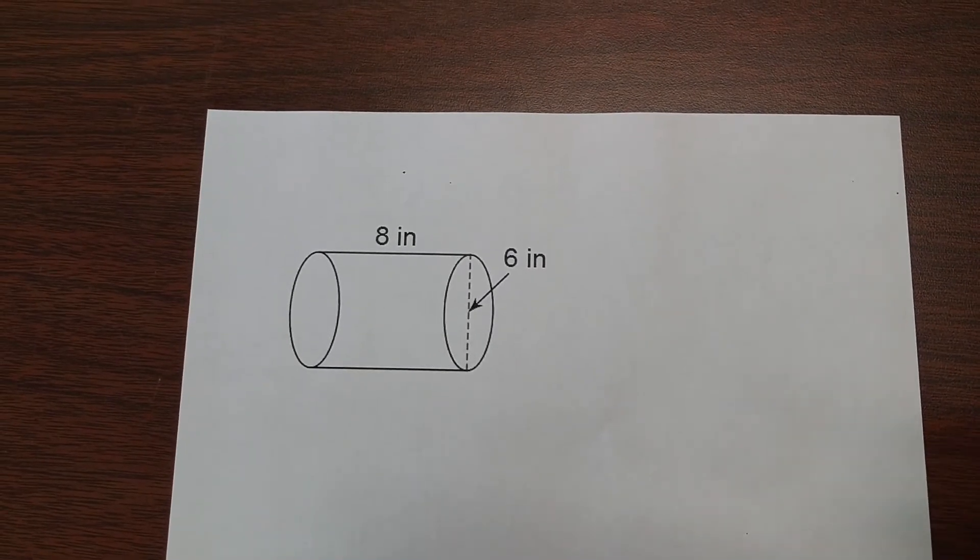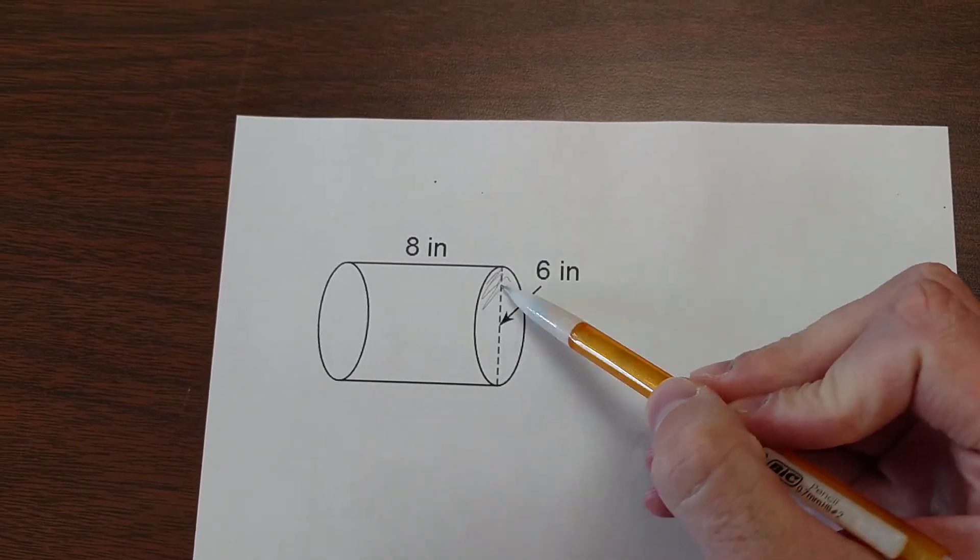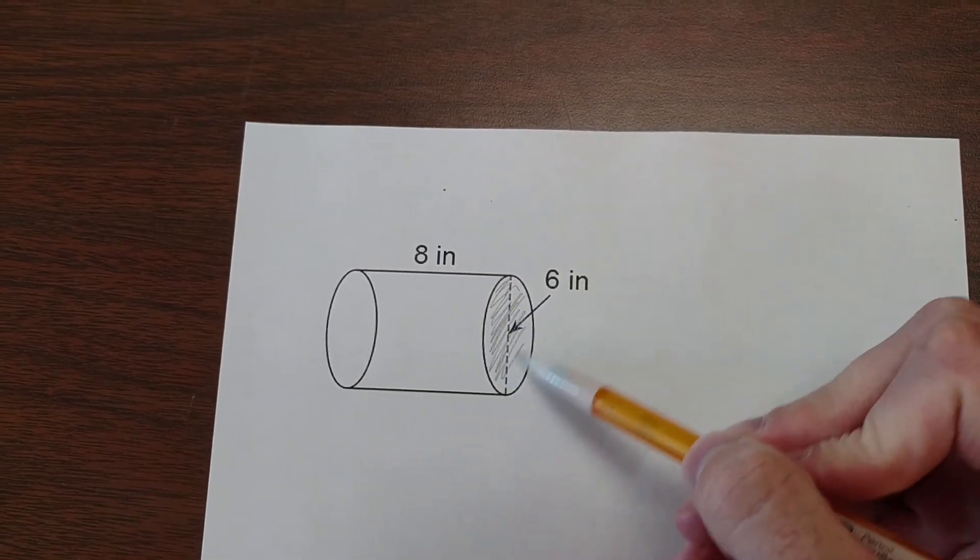When finding the volume of a cylinder that's not sitting on its base, it's important to remember that the circle is still the base of the cylinder.